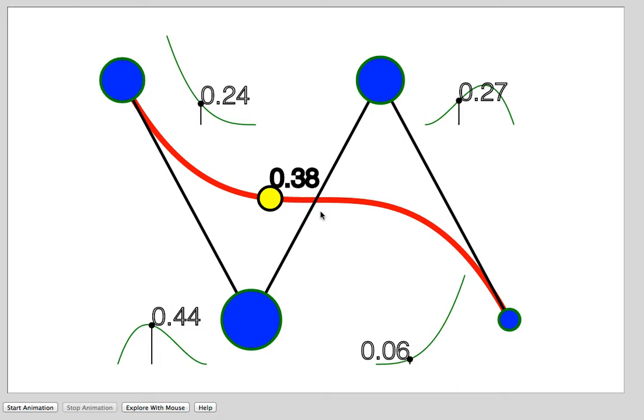Each location along the curve is determined by a parameter value, which ranges from 0 to 1. As you see it now, the parameter value is 0.38.